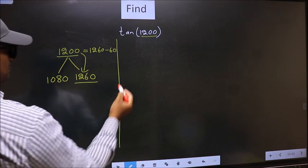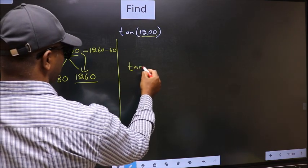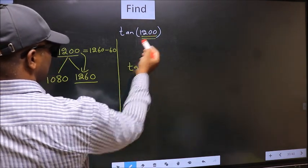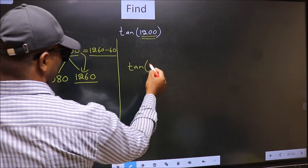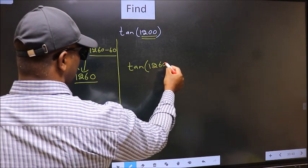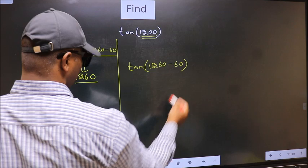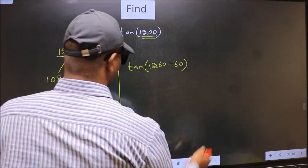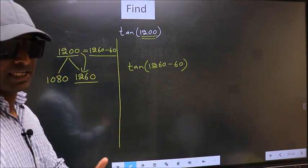So this will become tan. In place of this, we write this 1260 - 60. This is your step 1.